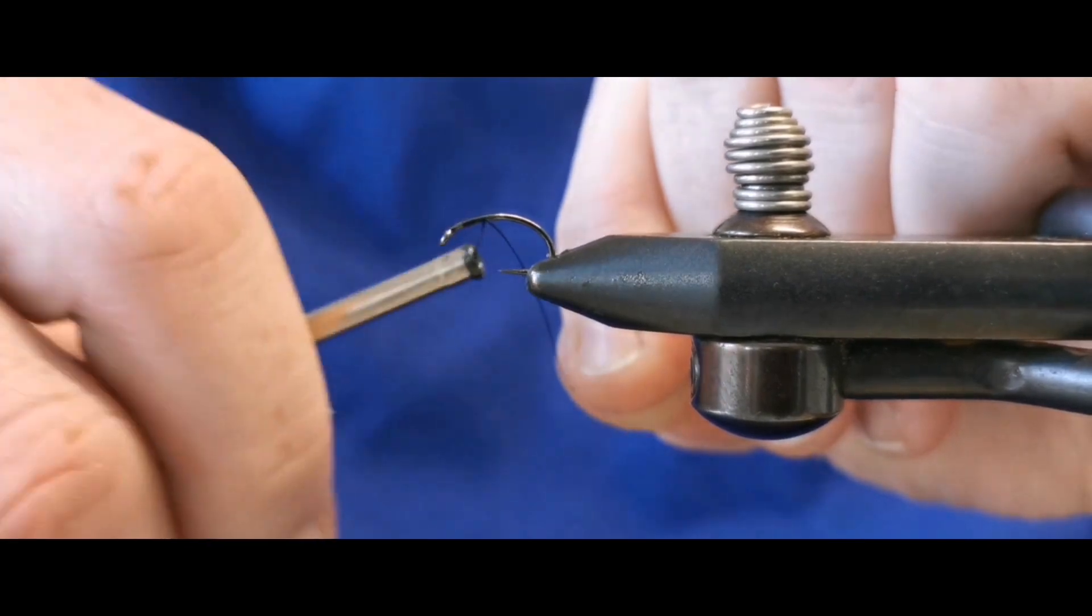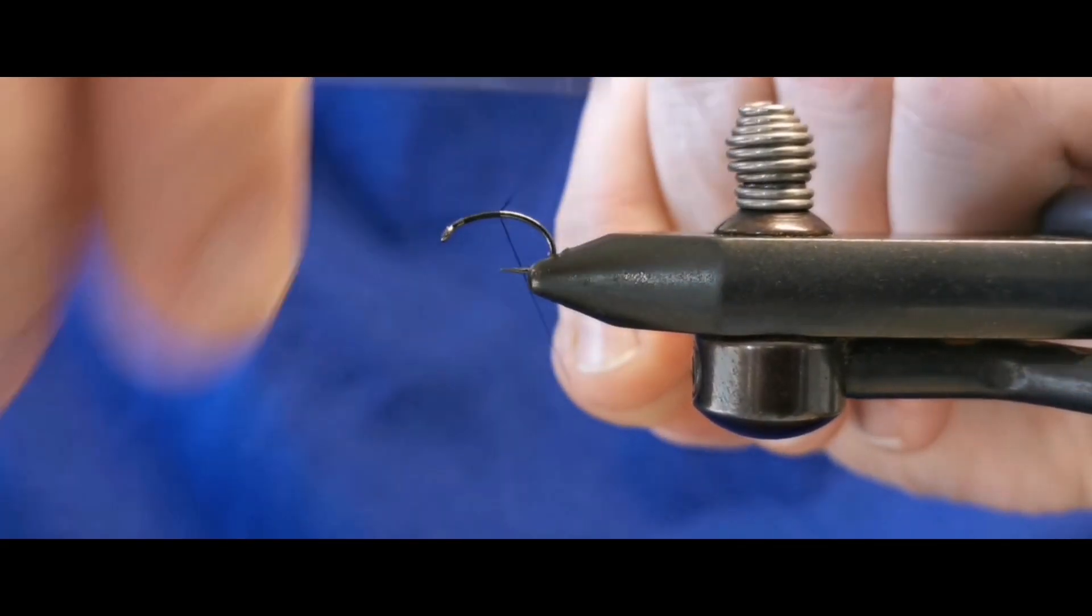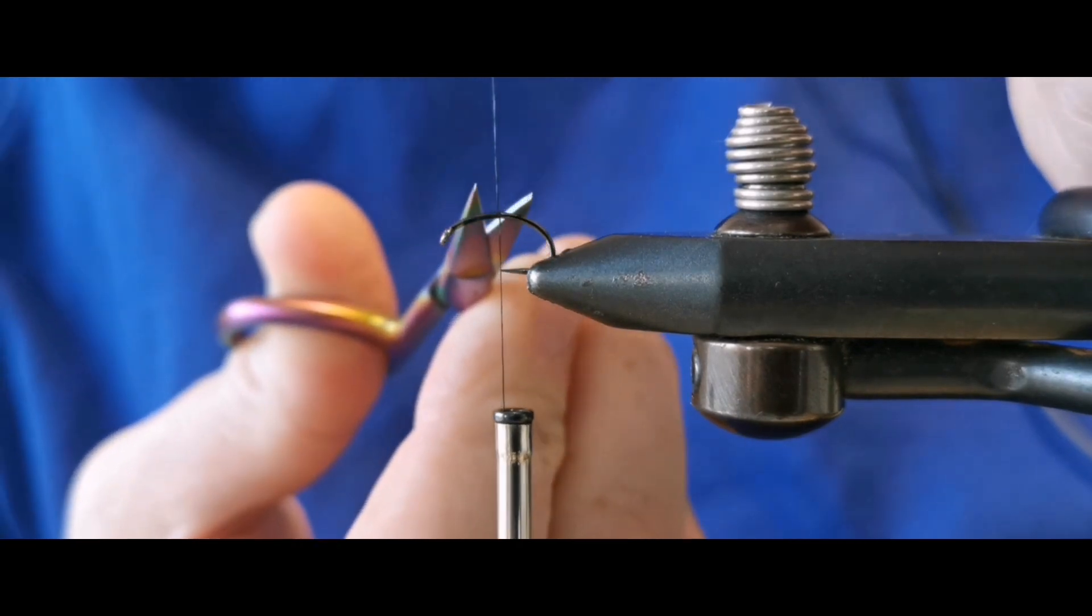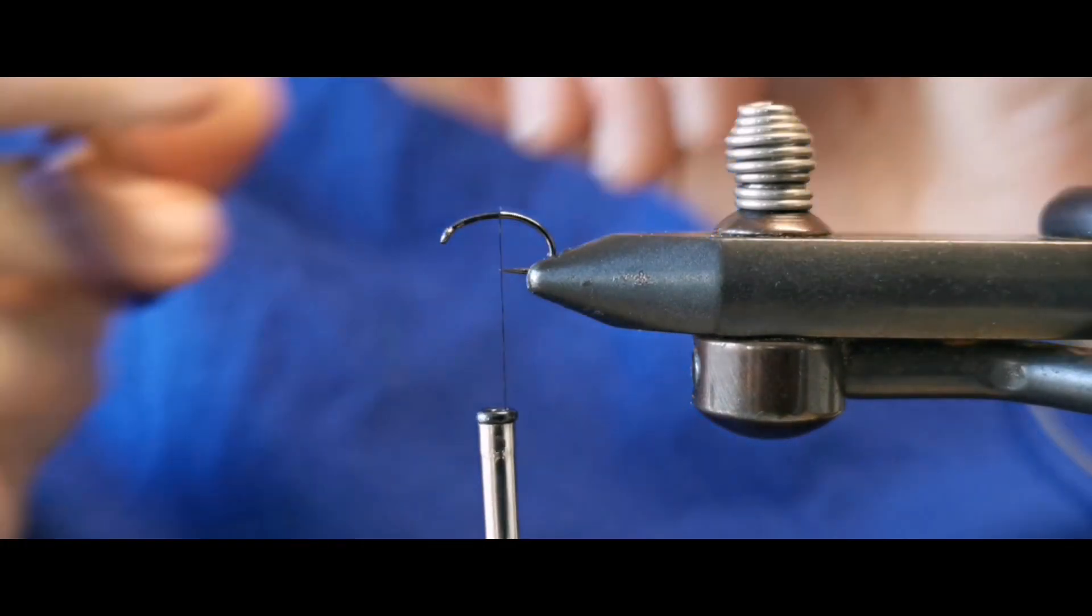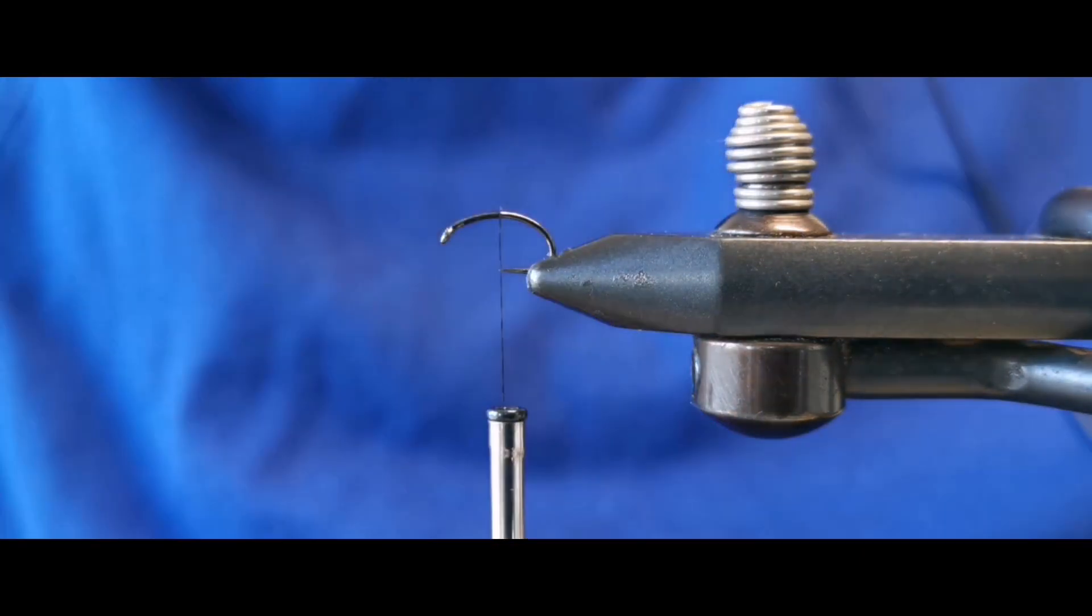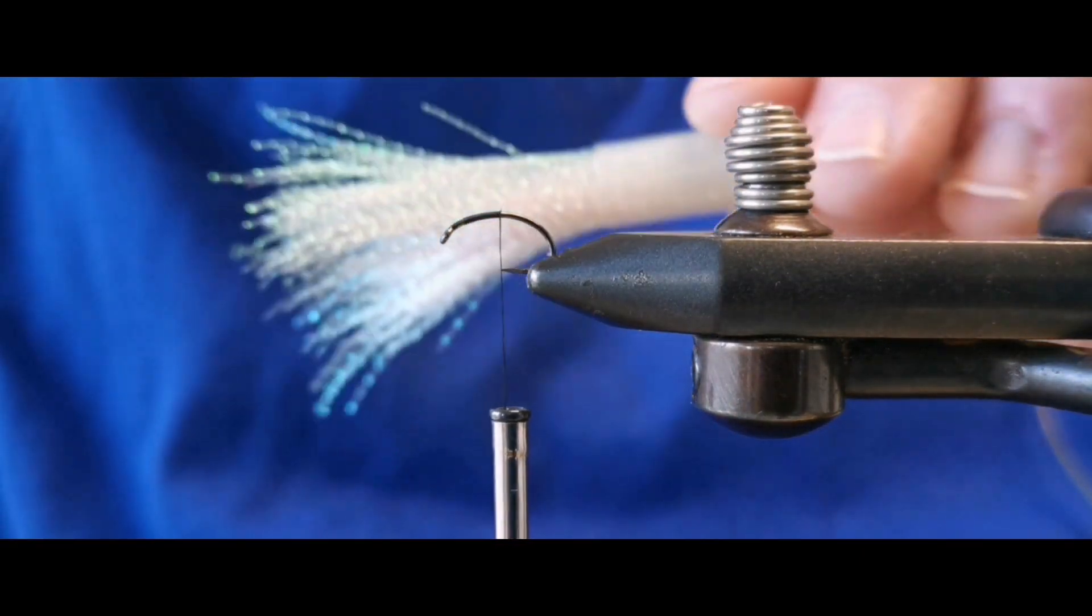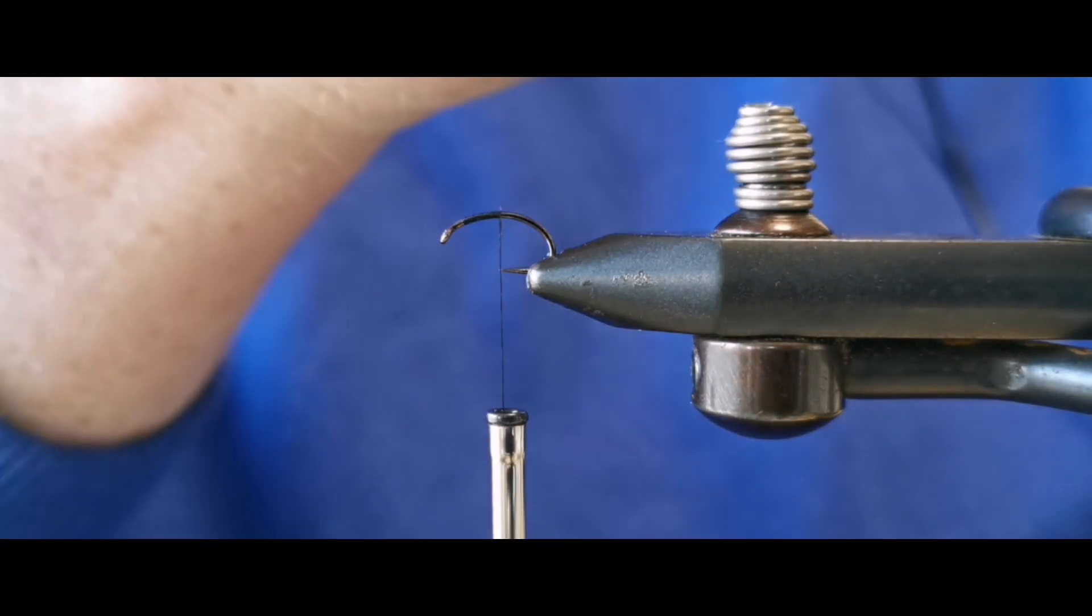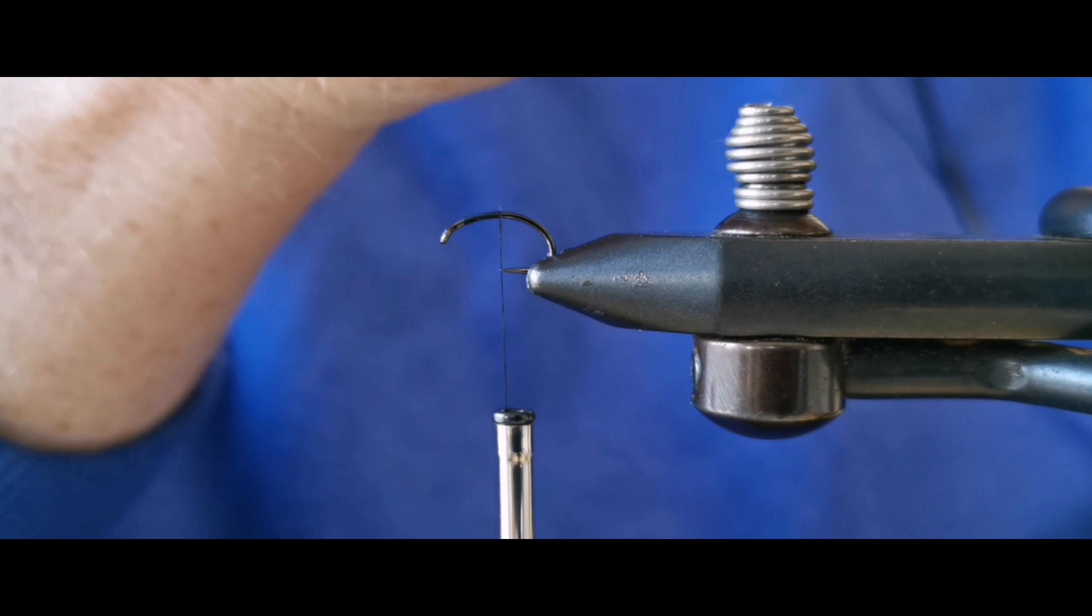The thread I'm going to use is Semperfly 50mm in black, so we'll just get our thread started behind the hook. We'll run on a few turns of thread, come on and snip away the excess. Now on the way down the hook, at the very tail we're going to have a bit of pearl flesh.